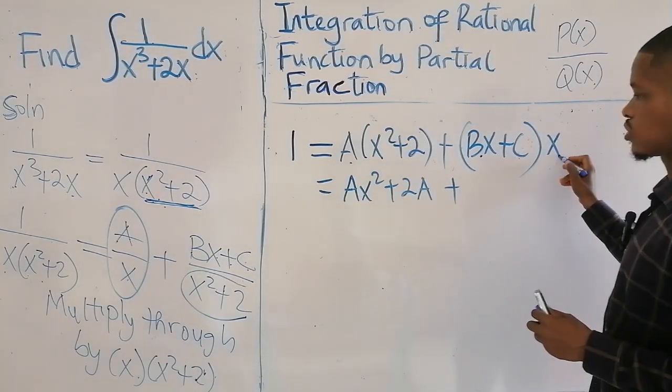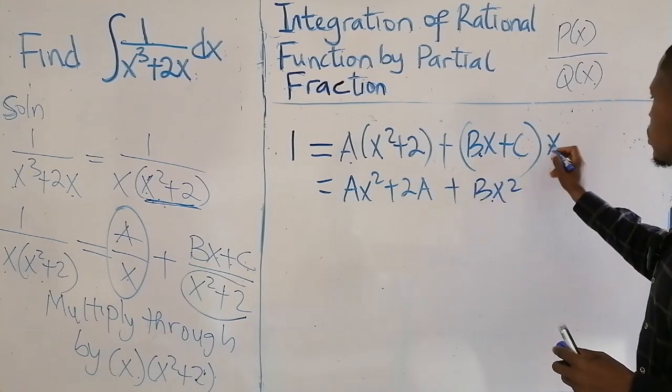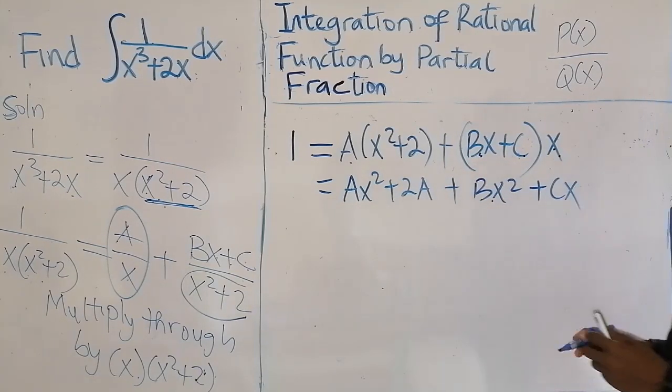that's AX squared plus 2A. Then plus this one times this one, that will be BX squared. This one times this one, that's CX equal to 1.